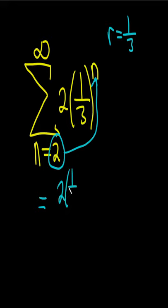So it's 2 times 1 third squared. Then you just divide by 1 minus r, so 1 minus 1 third. And that's the answer. We just have to simplify it.